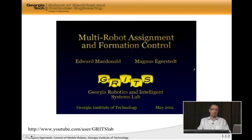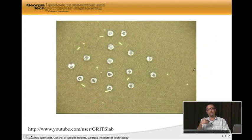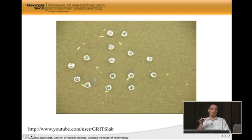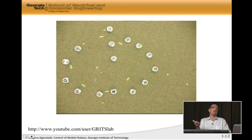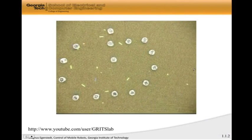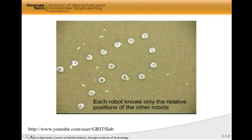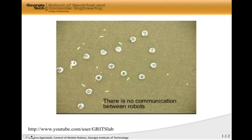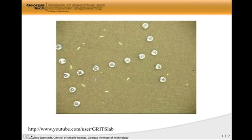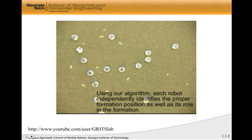Here is actually an example of what I do. A lot of the things we're going to learn in the class are present here. In this case, you have 15 mobile robots on the ground, and they have to together solve some kind of coordinated control problem. In this case, what they have to do is spell GRITS, because I'm the director of the GRITS Lab, which stands for the Georgia Robotics and Intelligence Systems Lab. There is a link to a lot of our videos on YouTube. What the robots need to do is use the information available to them and come up with control strategies based on that.